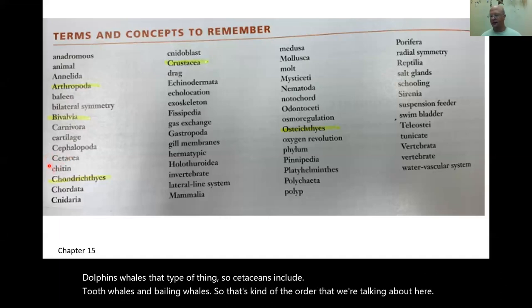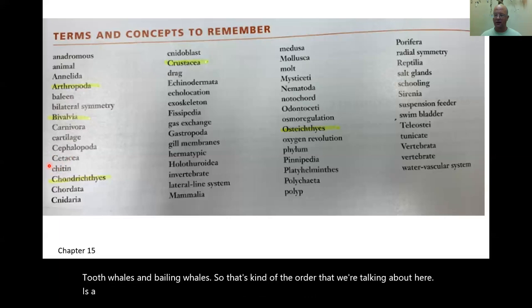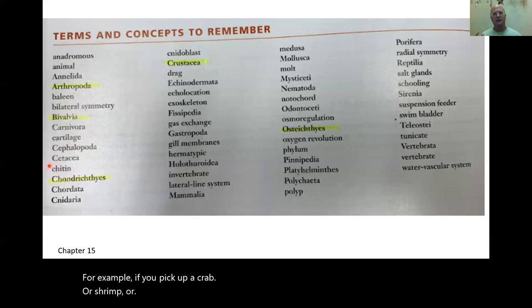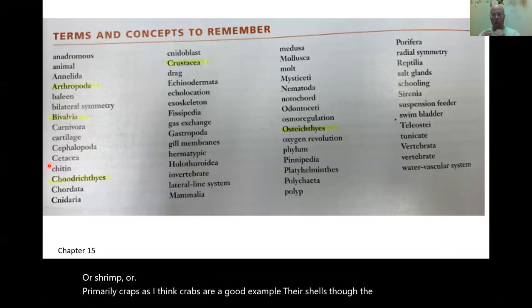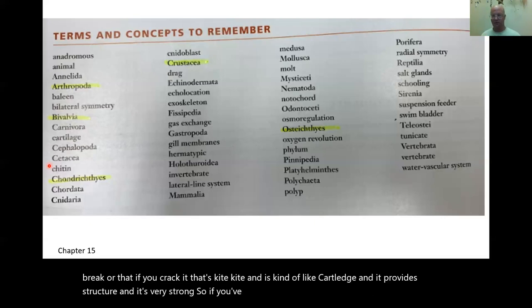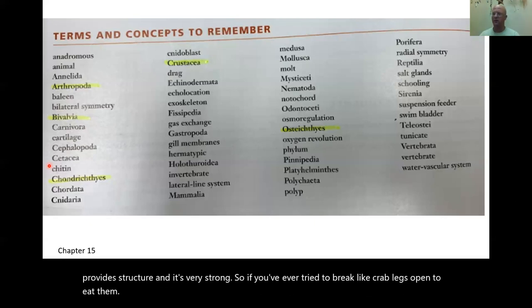Chitin is a molecule commonly found in many ocean animals. If you pick up a crab or shrimp, their shells — the hard part you crack — that's chitin. Chitin is kind of like cartilage in that it provides structure, and it's very strong. If you've ever tried to break crab legs open to eat them, it's hard.